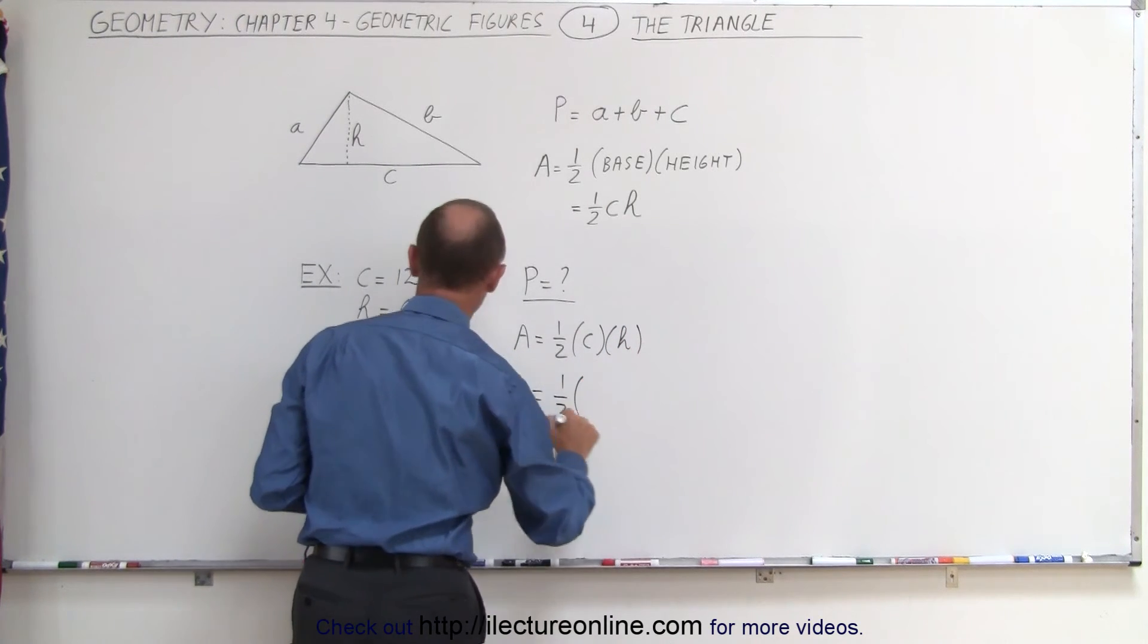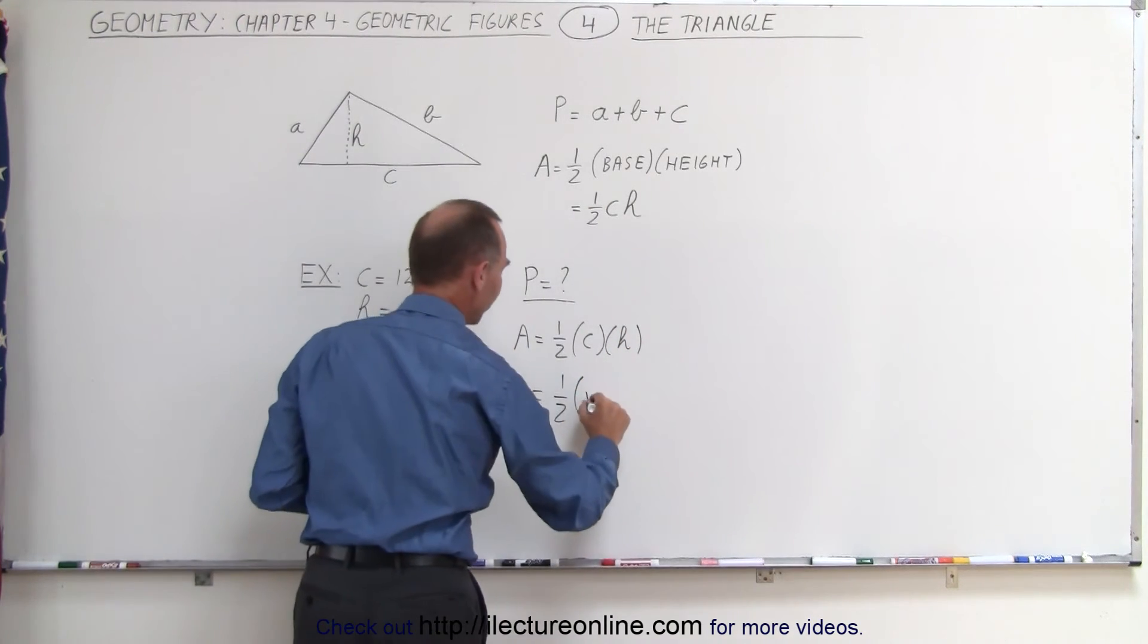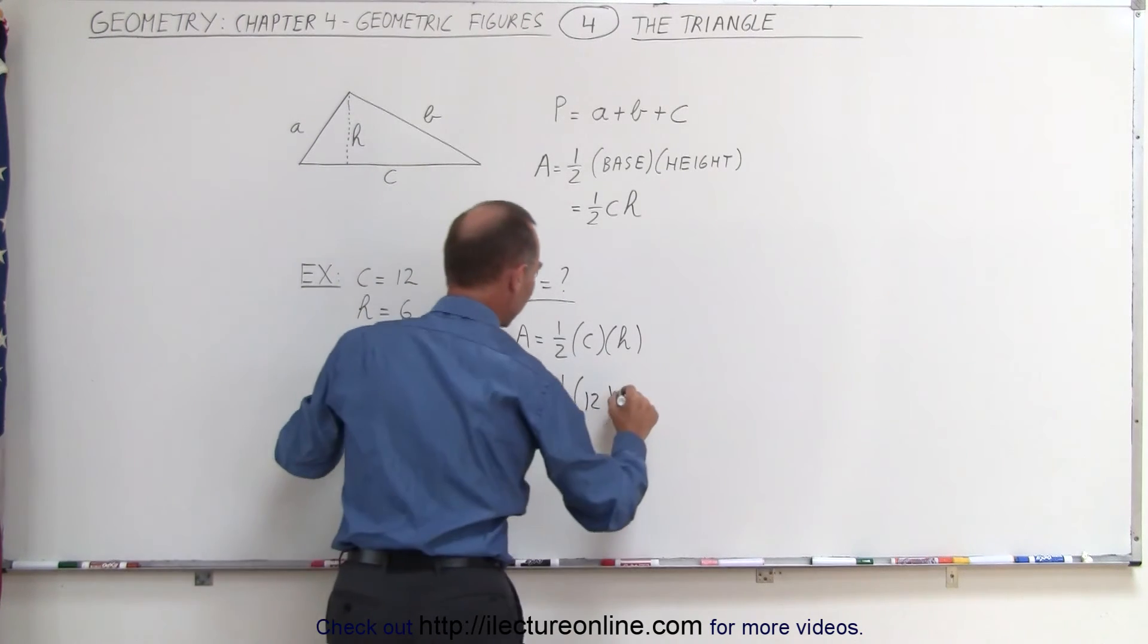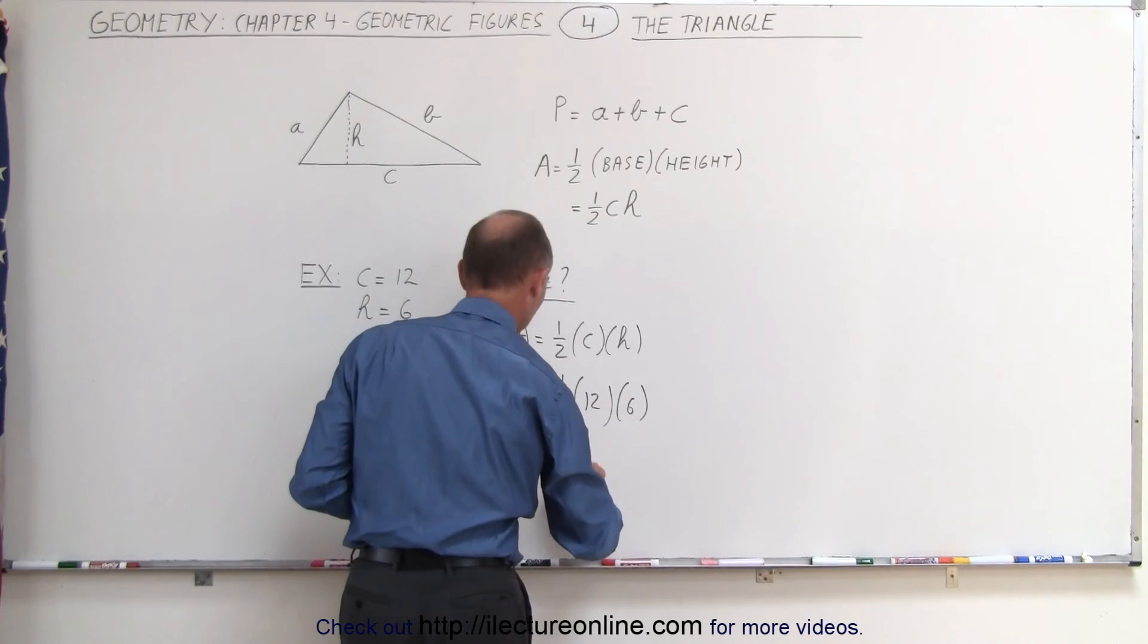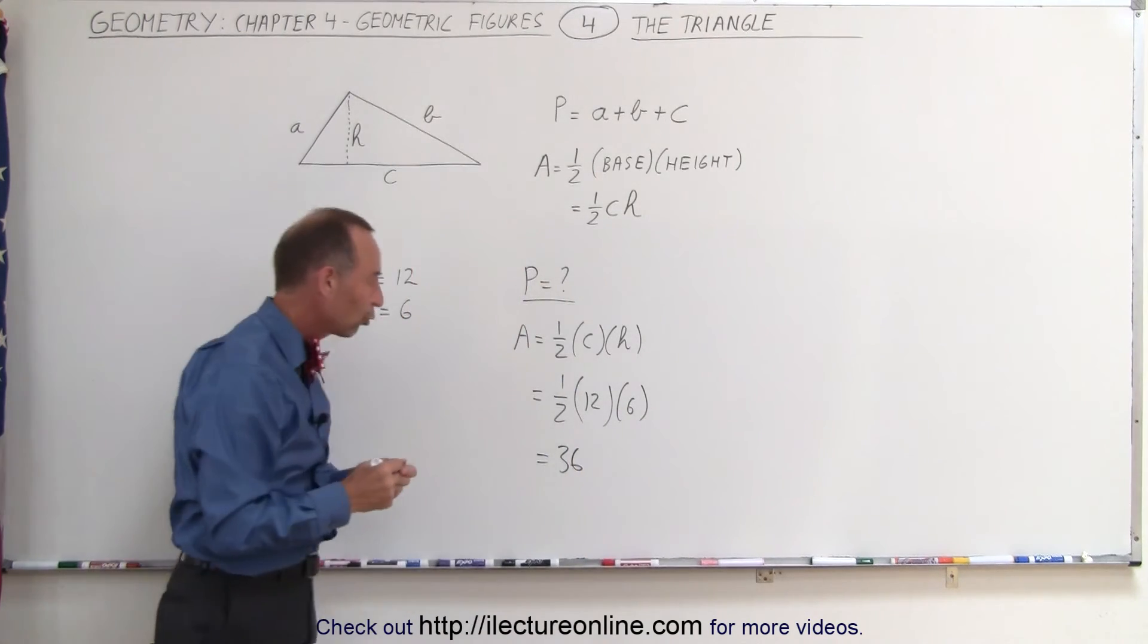So in this case, that's one-half times, in this case, C is equal to 12, and H is equal to 6. So one-half times 12 is 6. 6 times 6 is 36. So that would be 36 square units.